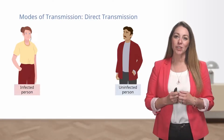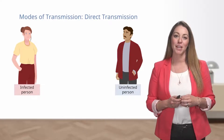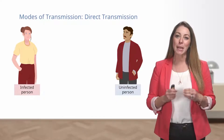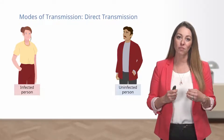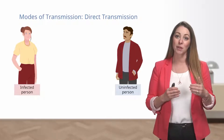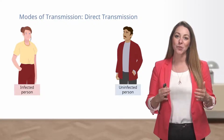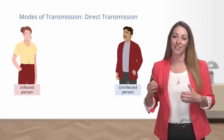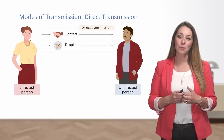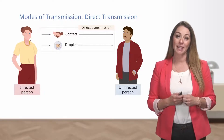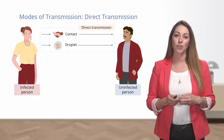The first type of disease transmission we'll discuss is direct transmission. Direct transmission occurs by immediate transfer of infectious agents from a reservoir — in this instance an infected person — to a new susceptible host. As you can see, we have a healthy, uninfected person as the host. Direct transmission can happen in two different ways: either through direct contact or droplet spread.